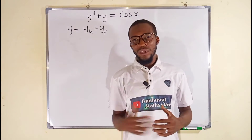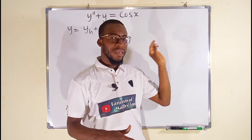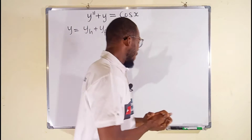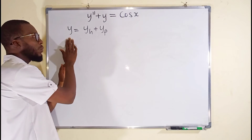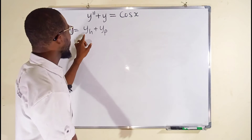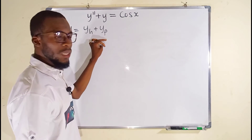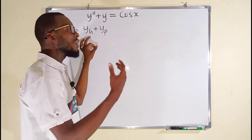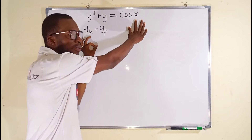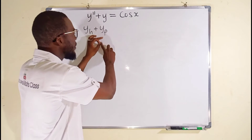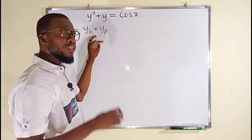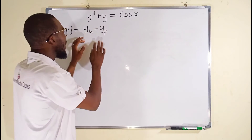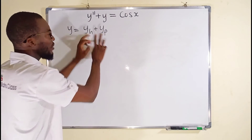Remember, previously we have solved a problem where the right-hand side is an algebraic function, but today you can see it is a trigonometric function. The general solution is given by y, which is a function of x, equal to y sub h plus y sub p, where y sub h is the general solution to the homogeneous type, and y sub p is the particular solution, which depends on the nature of the right-hand side — this is our g of x.